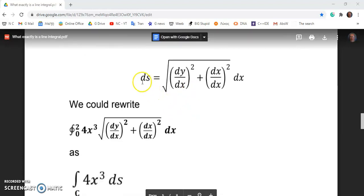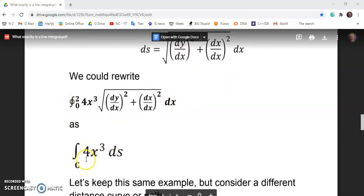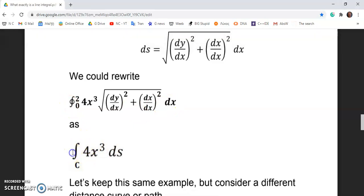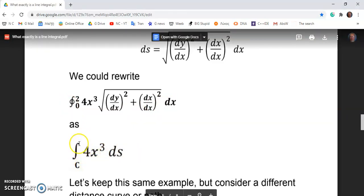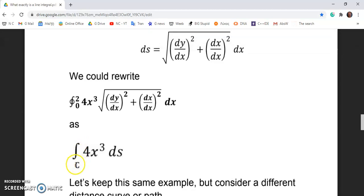In the previous example, the distance is given by ds equal to the expression you see here. And we could rewrite this as what you see over here where I'm pointing with my cursor, the integral with respect to the curve C of 4x cubed and taken with respect to arc length, which is ds.